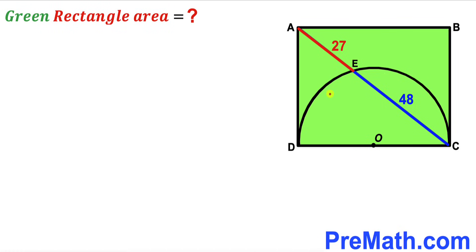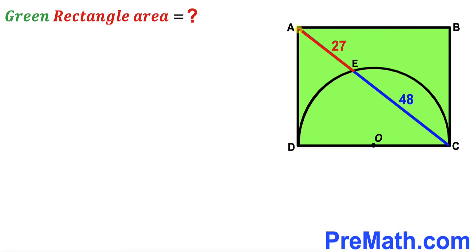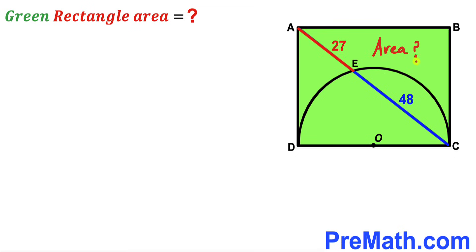Welcome to pre-math. In this video we have a semicircle with center O fully inscribed in a green shaded rectangle ABCD. In the given diagram, chord CE has a length of 48 units, segment AE has a length of 27 units, and points A, E, and C are collinear. Our task is to calculate the area of this green shaded rectangle ABCD.